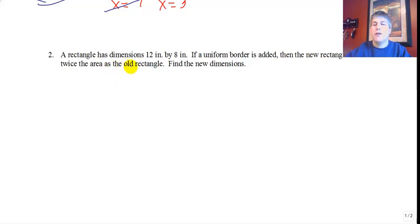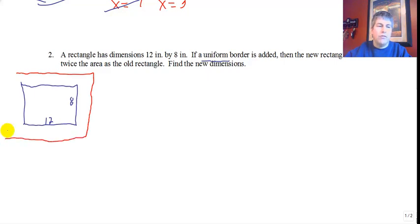Moving on to sample problem 2. A rectangle has dimensions that are 12 by 8. I'm going to stop reading and I'm going to draw a rectangle that is 12 by 8. One dimension is 12, the other dimension is 8. If a uniform border is added, the new rectangle has twice the area of the old rectangle. Well, a uniform border means the border is the same width all the way around. If I'm going to add a border, I'm going to have a new rectangle on the outside of my original rectangle.